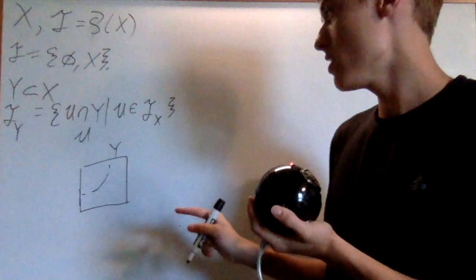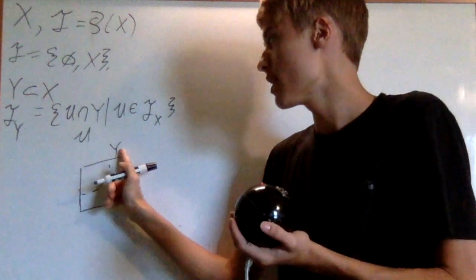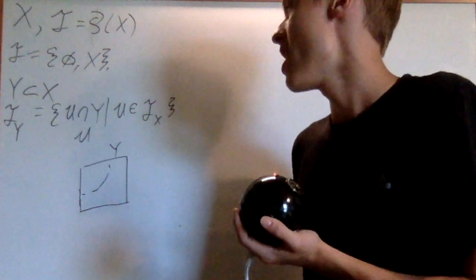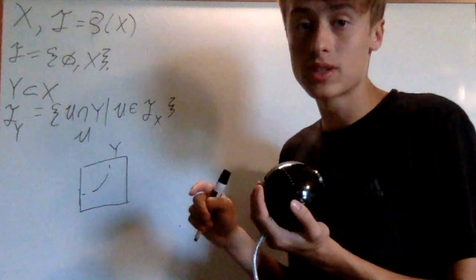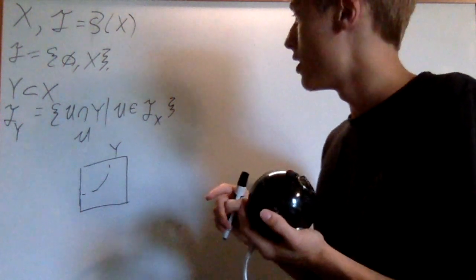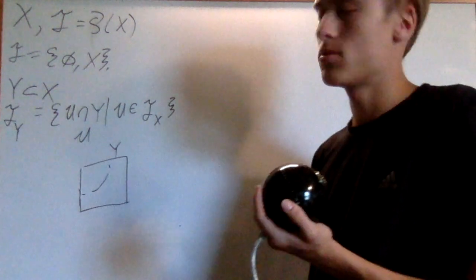But if Y is open, then every open set in Y is also open in X, due to the fact that the finite intersection of open sets is open. So U intersect Y would still be open.